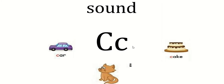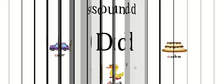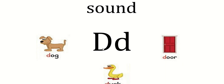The next sound is C, which makes the Kha sound — C: Kha — car, C: Kha — cat, C: Kha — cake. The next sound is D, meaning Da: D — Da — dog.